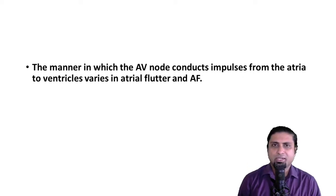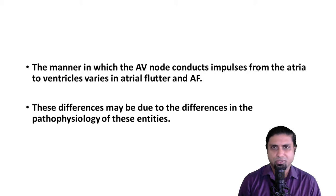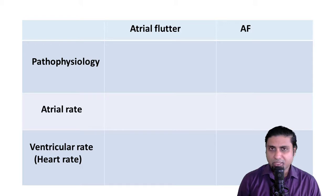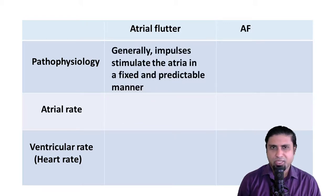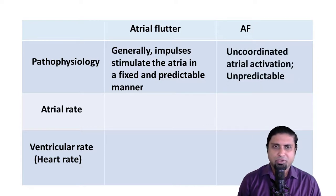The manner in which the AV node conducts impulses from the atria to the ventricles varies in atrial flutter and atrial fibrillation. These differences may be due to differences in the pathophysiology of these entities. In atrial flutter, abnormal impulses are generated in the atria, but in general these impulses stimulate the atria in a fixed and predictable manner. On the other hand, in atrial fibrillation there is nothing fixed and predictable — there is completely uncoordinated, highly chaotic atrial activation.